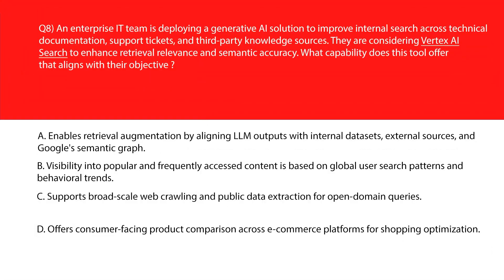Now let's look at the Vertex AI Search question. Option A says enable retrieval augmentation by aligning LLM outputs with internal datasets, external sources, and Google's semantic knowledge graph. This supports LLM grounding using enterprise and external data sources plus semantic context — let's keep it. Option B says visibility into popular and frequently accessed content based on global user search patterns and behavioral trends. This focuses on popularity metrics, not semantic grounding or enterprise relevance — incorrect.